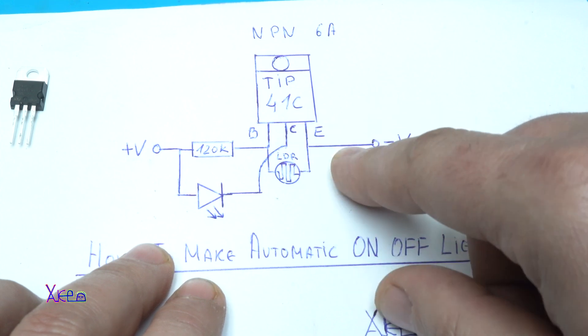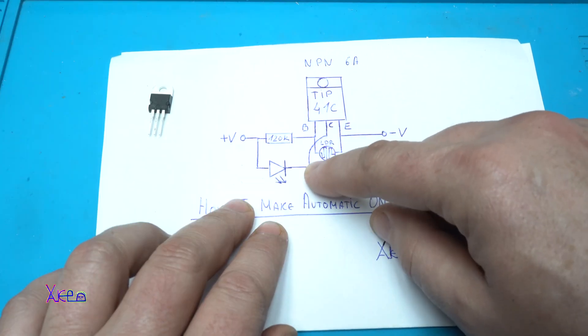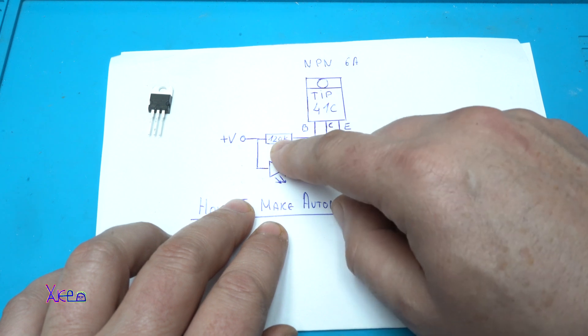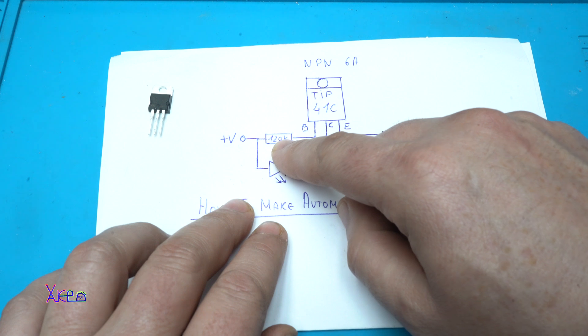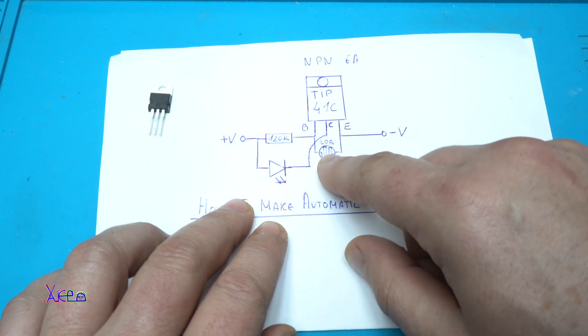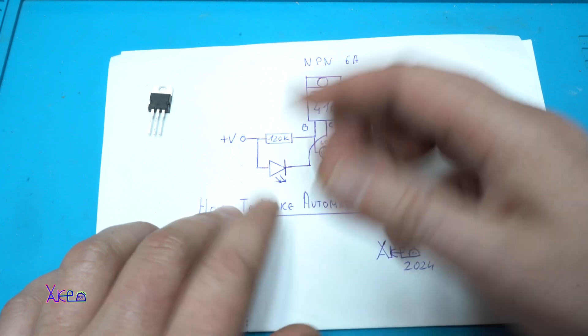On emitter is negative power supply. The collector is output for the LED. On base is connected 120 kilohm resistor going to the positive power supply, and the photoresistor is connected between base and emitter.